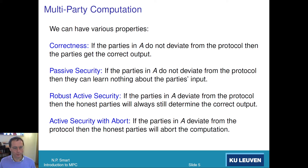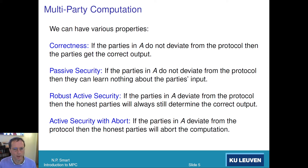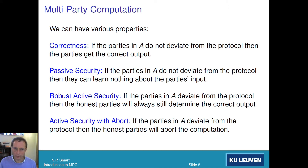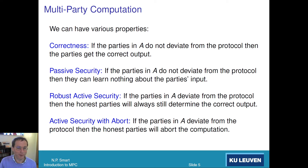Let's look at passive security, often called honest but curious. In an honest but curious protocol, the parties — even the bad people — honestly follow the protocol, but they're curious about what the other parties' inputs are. However, that's a kind of weak form of security. It's akin to passive security for encryption schemes. And just like we have passive and active security for encryption schemes, we also have active security for MPC.